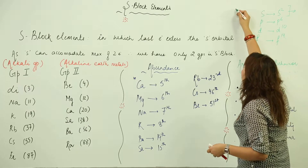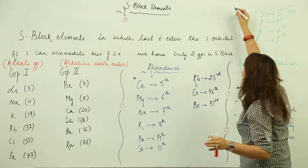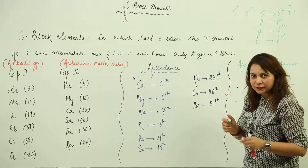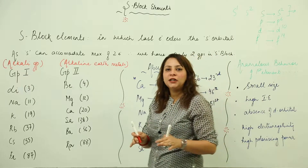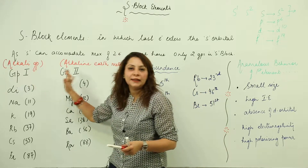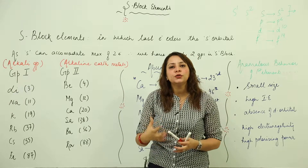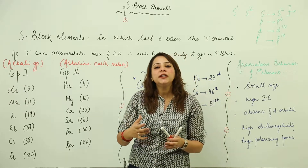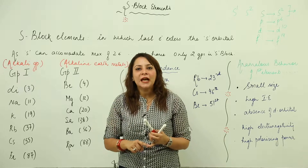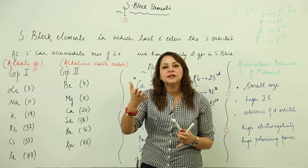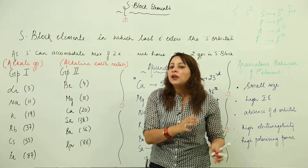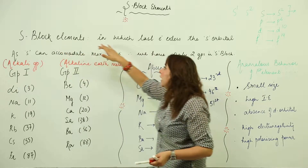Since s can accommodate a maximum of 2 electrons, there will be only two groups in the s block — the element can have either 1 or 2 electrons in the s orbital. So in the periodic table, the s block has only two groups: Group 1 and Group 2. Before we proceed, recall that elements are classified into blocks depending on which orbital the last electron enters — the element is regarded as a member of that block.